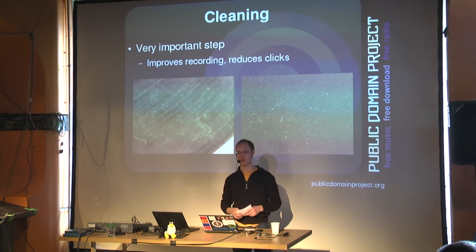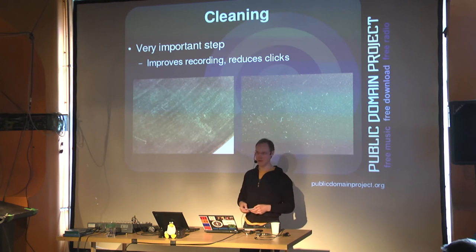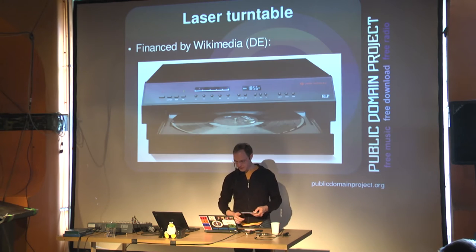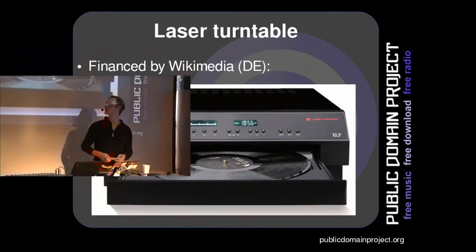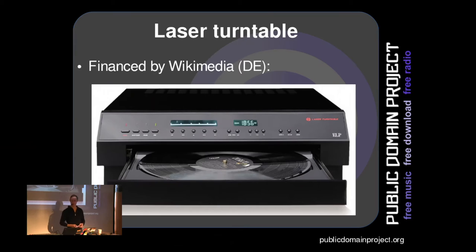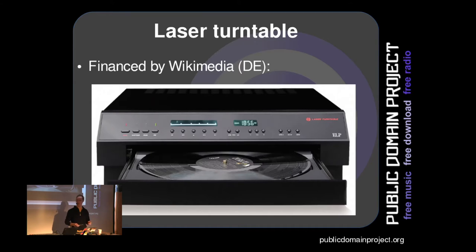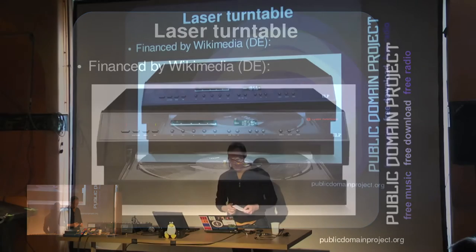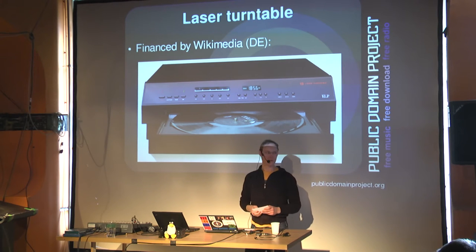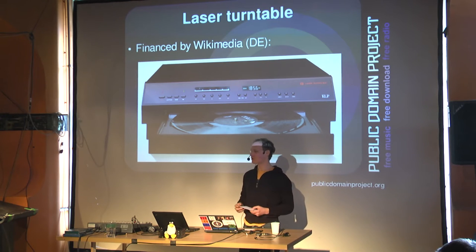We clean our records with the Keith Monks record cleaning machine, purpose-built for archival use — it can clean records larger than 12 inches, such as those used in radio studios. After cleaning, we use our Japanese laser turntable to digitize records when possible. It's a great machine with excellent output resolution and handy to work with, but it has certain limitations with some special old records, such as single-sided Edison discs which are very thick and the laser is unable to focus on them.